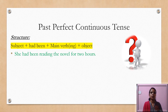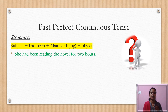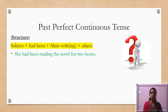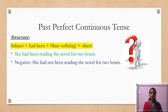Comparing with present perfect continuous tense — there we have two helping verbs: 'has been' and 'have been' — but here there is only one helping verb: 'had been.' For example, 'She had been reading the novel for two hours.' For negative sentences, we use 'not' between the two parts of the helping verb: 'She had not been reading the novel for two hours.'